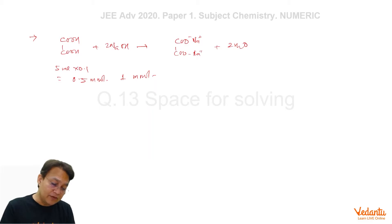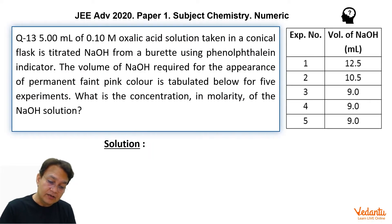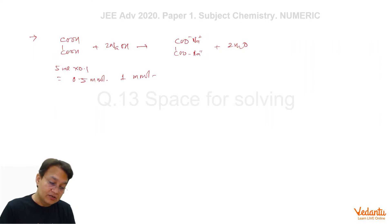So 1 millimole of NaOH is required, and if you notice that 9 ml of NaOH was used. So definitely this 1 millimole must be equal to 9 times the molarity, and this gives us the molarity equals 1 upon 9 which is 0.11, and that is your answer.